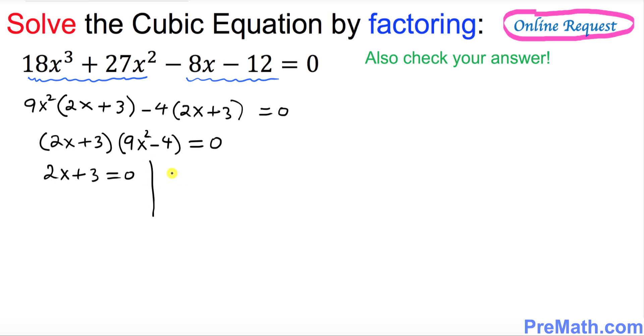Move this positive 3 on this side, so 2x = -3. Divide both sides by 2, so x turns out to be -3/2 as one of our solutions.